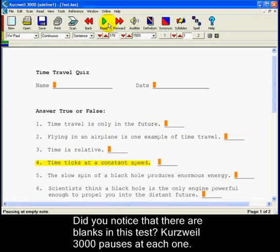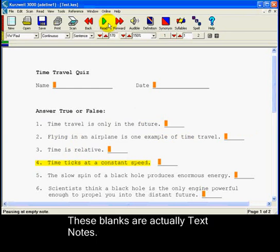Did you notice that there are blanks in this test and that Kurzweil 3000 pauses at each one? These blanks are actually text notes.